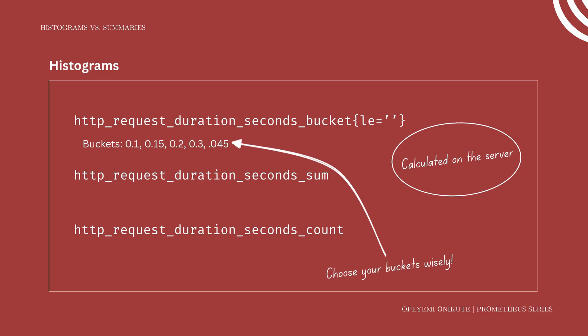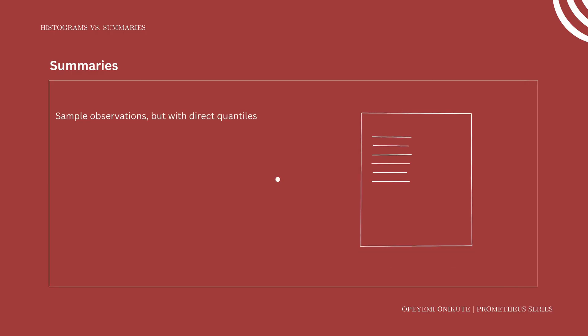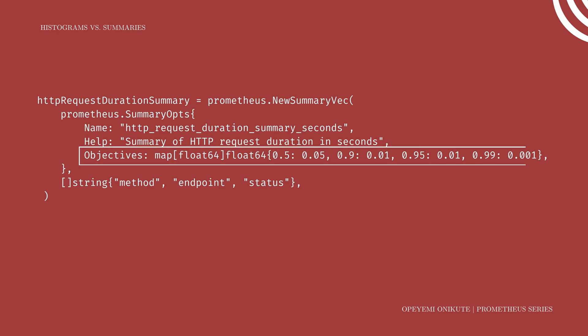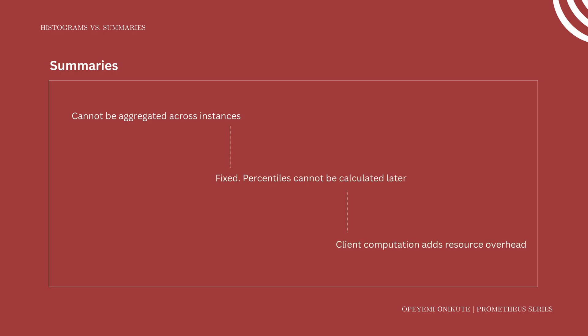The buckets you choose should be based on your SLOs, which set the operating objectives for your service. Summaries also sample observations and expose sum and count series, but they compute percentiles on the client. When you create a summary, you specify quantile objectives and optional error tolerances, and Prometheus exposes a time series with the quantile label. Summaries don't require bucket definitions and provide more accurate quantile estimates, but they have limitations: they cannot be aggregated across instances, are fixed at instrumentation time, and the client-side computation adds memory and CPU overhead.